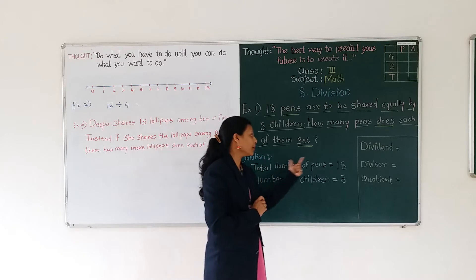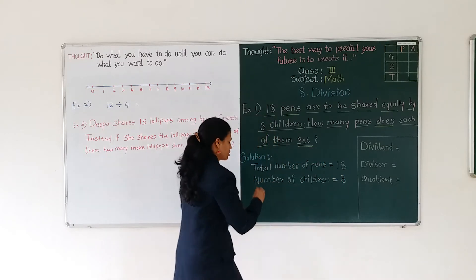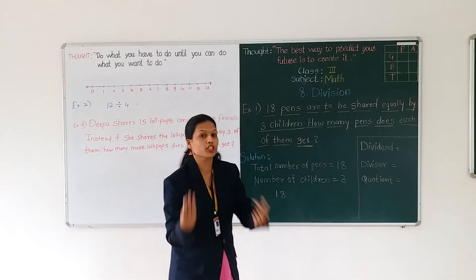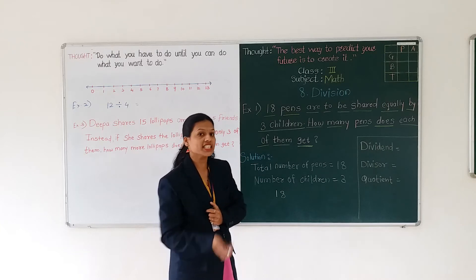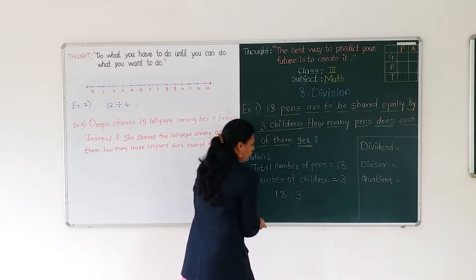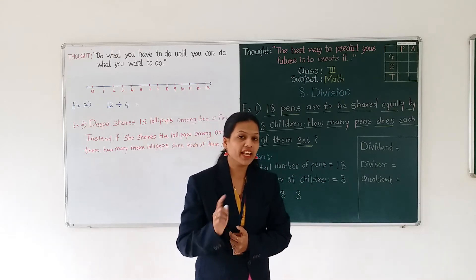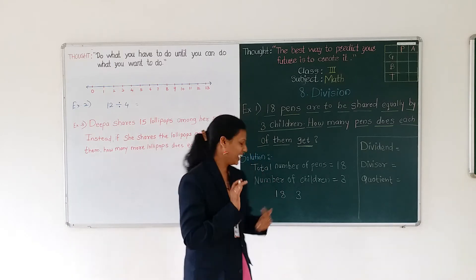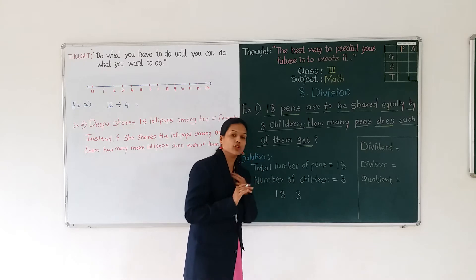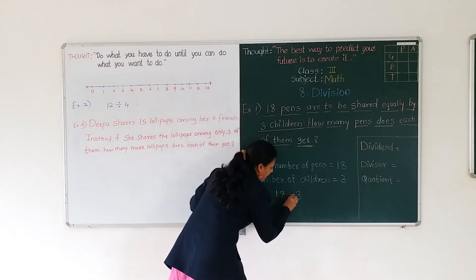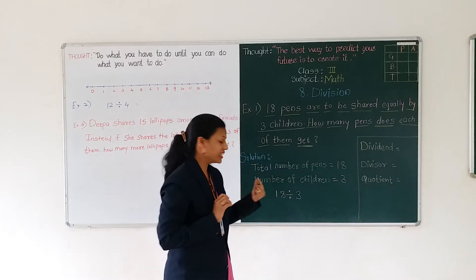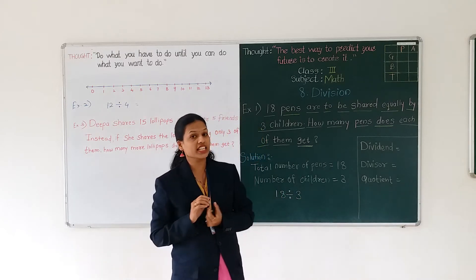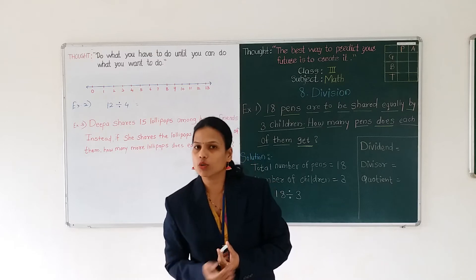If you see carefully, the total number of fans is 18. So first we will write down 18, and this 18 we have to distribute equally among how many friends? 3 friends. Last time I explained the terms dividend, divisor, and quotient. From this example, number 18 is your dividend. This sign is called the division sign. So 18 divided by 3. And this 3 is your divisor. We have to find out the answer — how many fans does each of them get?